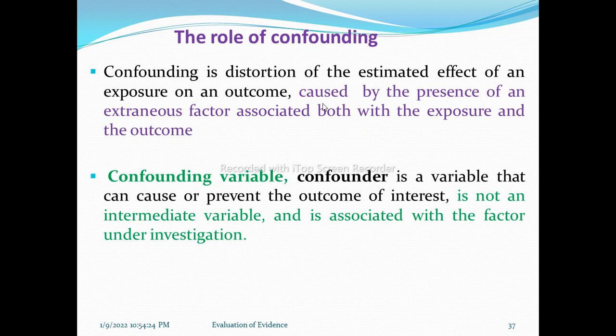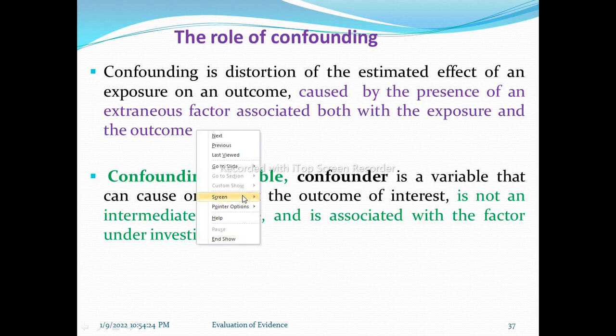Today we will see about the role of confounding. If there is an association between cause and effect, it should first be judged for chance, bias, and confounding. The third type is confounding. After completing confounding, we will see about judgment of causality.